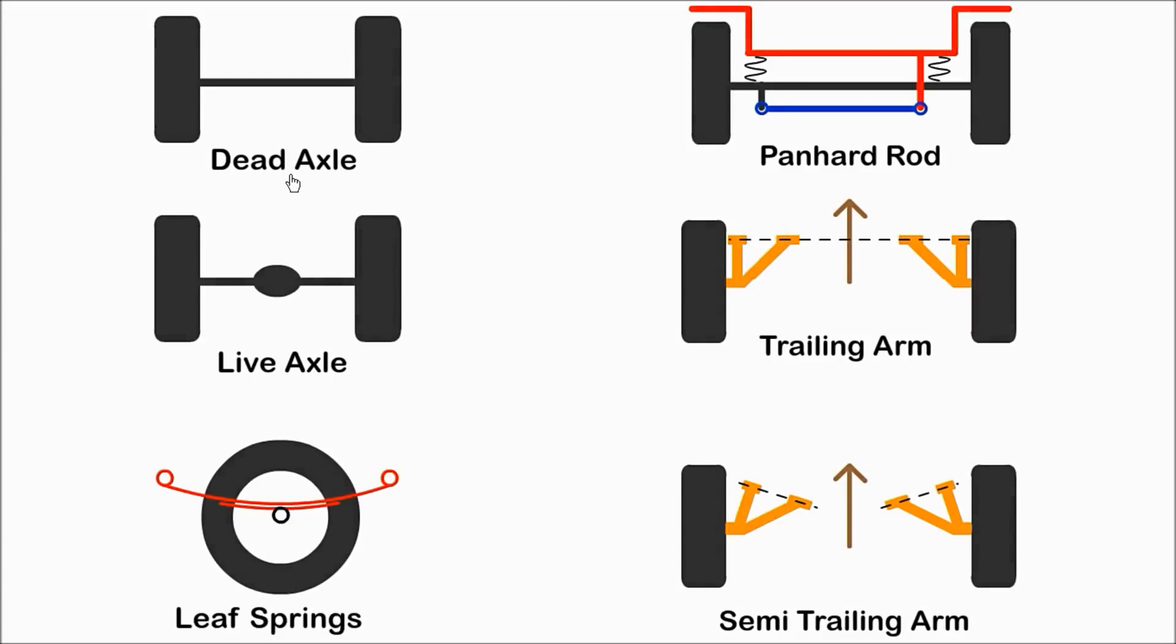A dead axle is not part of the drivetrain. The wheels are attached to it and it supports the weight of the vehicle. A live axle also drives the wheels and includes the differential. Leaf springs are made from layers of spring steel and are generally used on trucks. A panhard rod is allowed to pivot at both ends. One end is attached to the car structure and the other to the axle. As the axle moves up and down, the panhard rod prevents lateral movement. They are common on trucks.